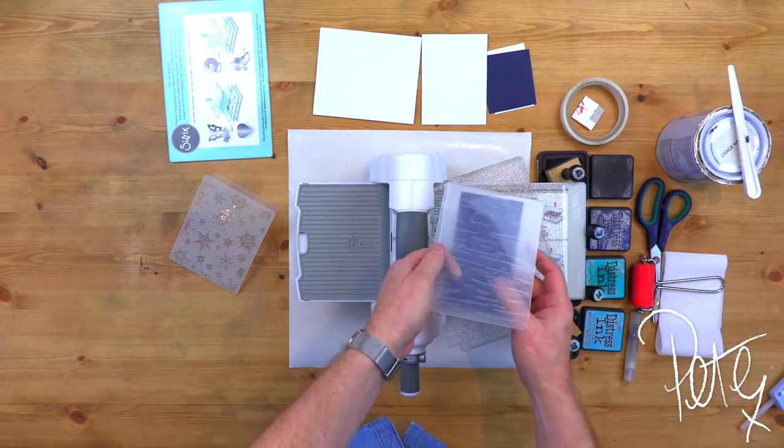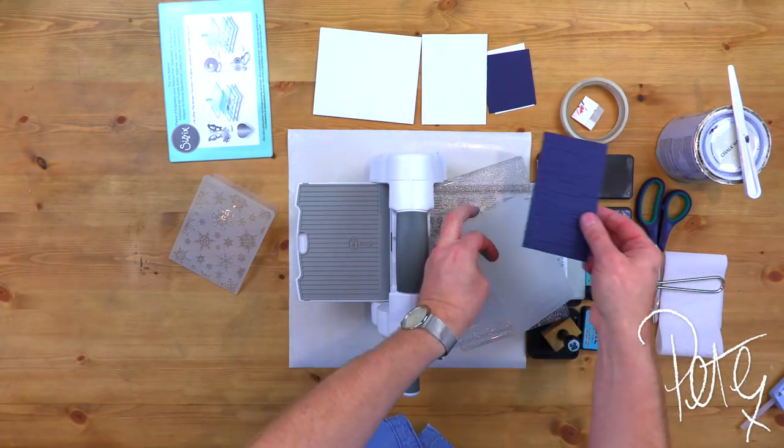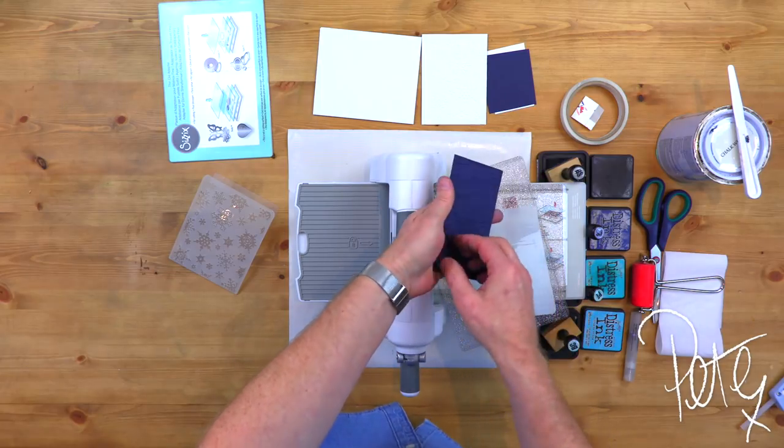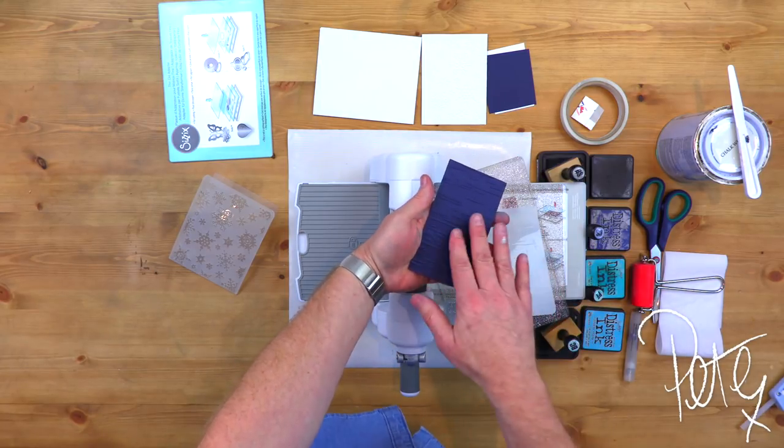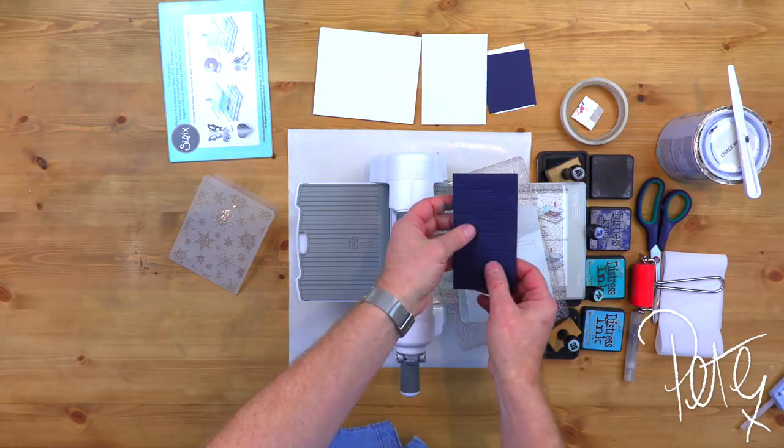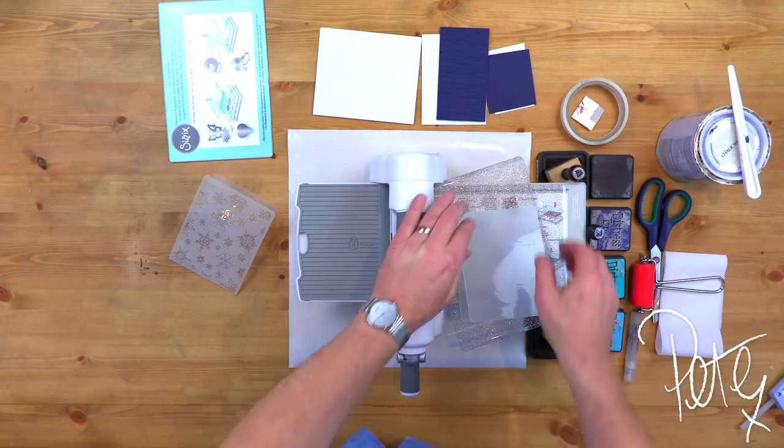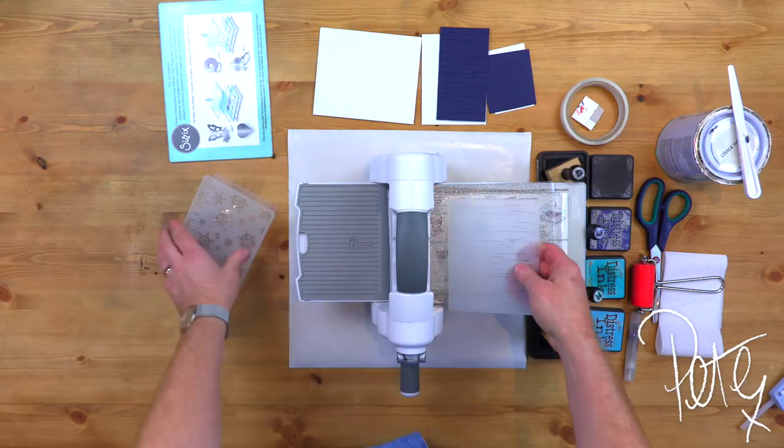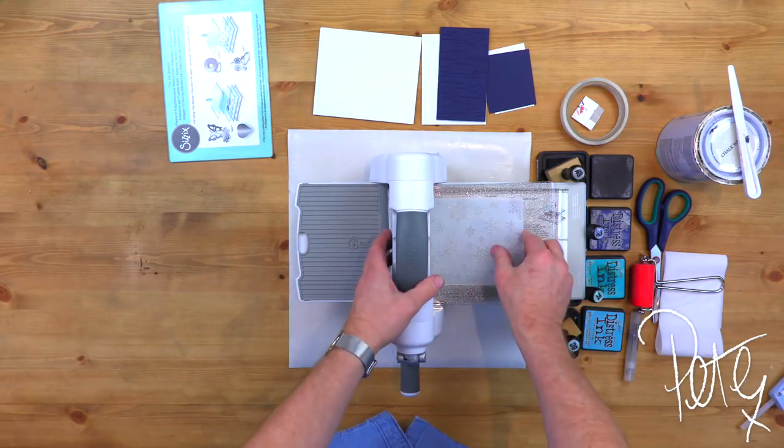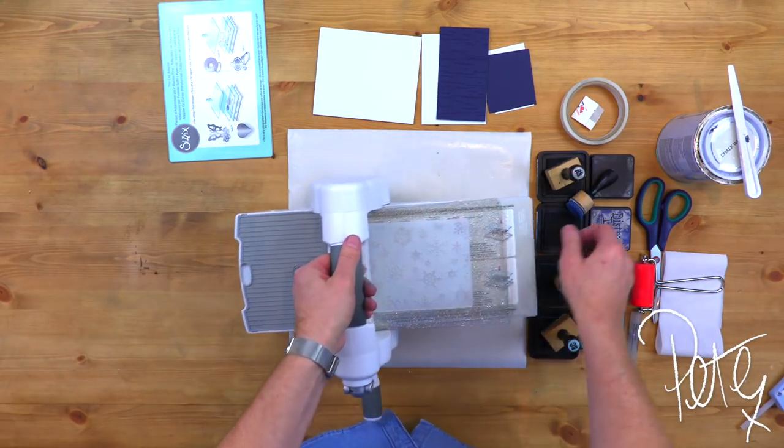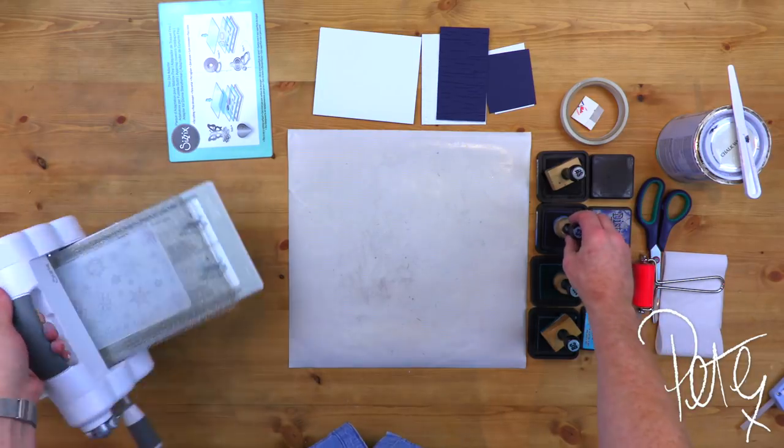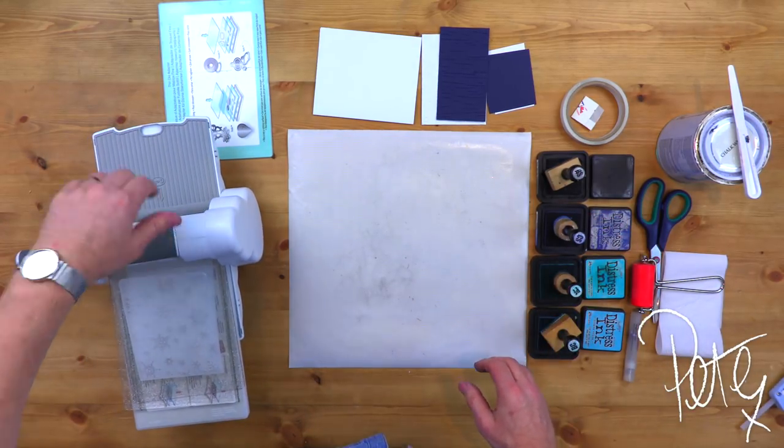But obviously with a stamp, you don't get the dimension, you don't get the depth. Whereas with this, you do. And I know at this stage, you're going to have to stay with me on this, folks. But you can see there, the pattern's in there, but we're going to transform that into a birch tree. Trust me. So that's all my embossing, there's no die cutting. This is just all about the embossing.